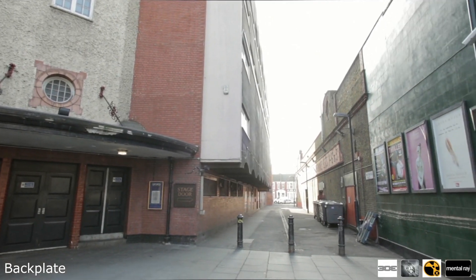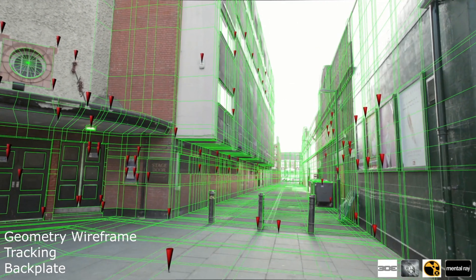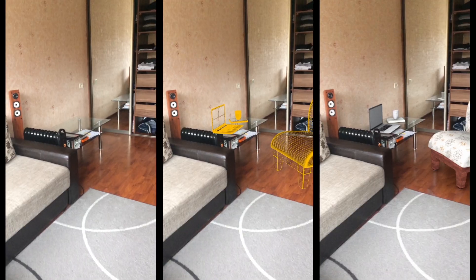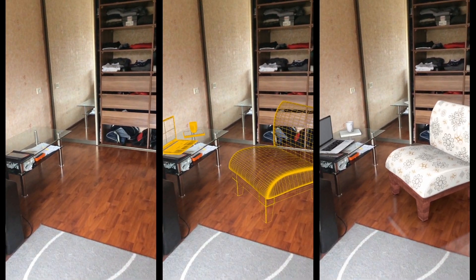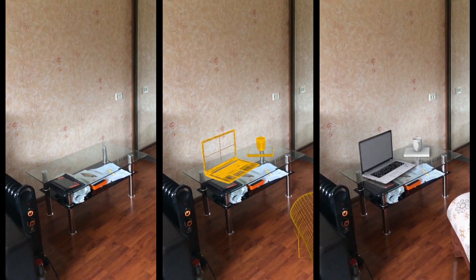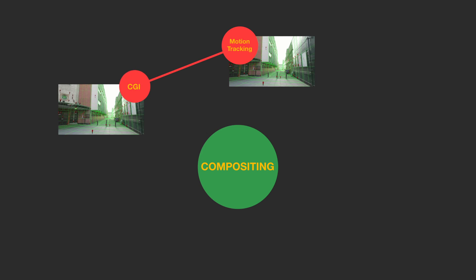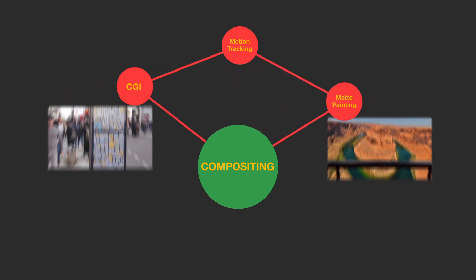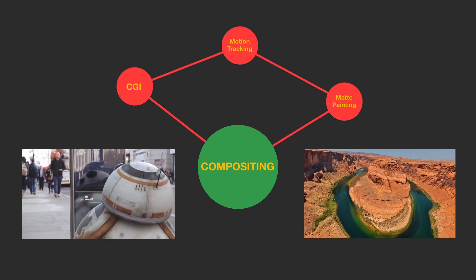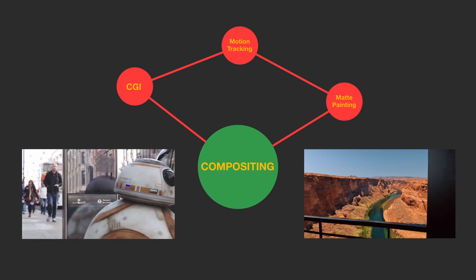If there's a complex camera motion involving CGI objects, characters, or the background, then the process also includes motion tracking, accomplished by different departments. The motion in the live-action shot is tracked and an identical virtual camera is created in 3D software, allowing other elements to be integrated in synchronization with the camera's motion. After the footage is tracked, the data is sent to the CGI or matte painting department so they can place their created elements in sync with the shot.